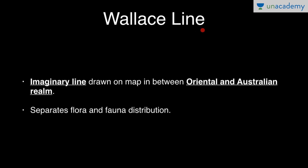Wallace's line is an imaginary line drawn on the map between the Oriental and Australian realms, separating them. It separates the flora and fauna distribution of these two parts.